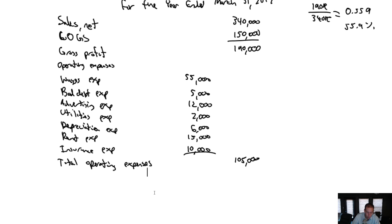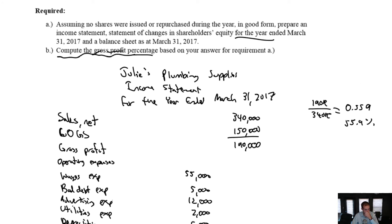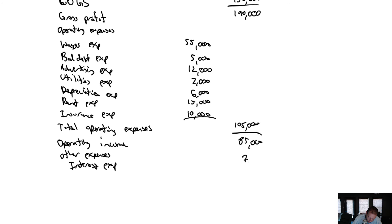Gross profit minus operating expenses gives us operating income, or income from operations. $190,000 minus $105,000 is $85,000. We do have one other expense — interest expense, which is $7,000. This brings us down to income before taxes: $85,000 minus $7,000 is $78,000.